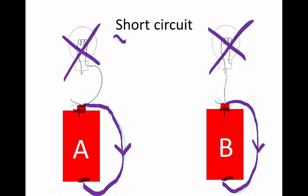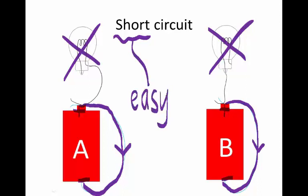These are called short circuits — not because the wires are short; you can have a very long wire and it will still be a short circuit. The 'short' part doesn't refer to length; it means easy — a very easy circuit. Very low resistance. Theoretically zero resistance, because these wires are meant to have no resistance.